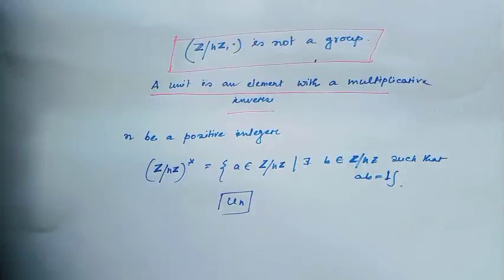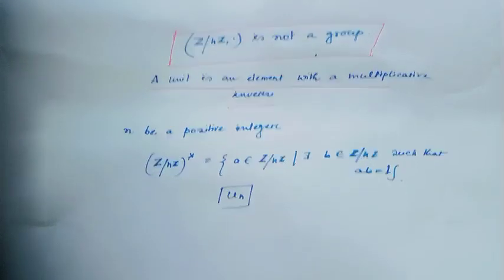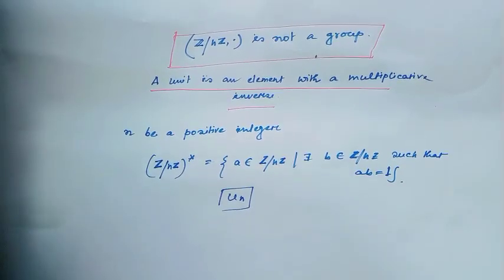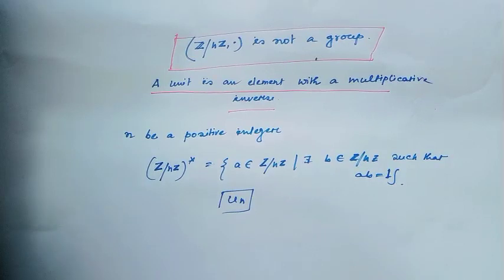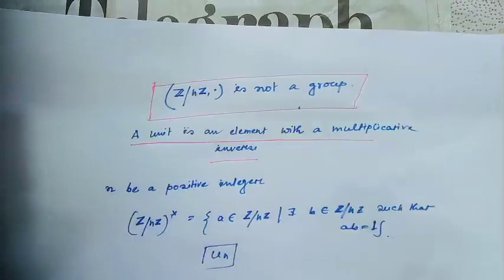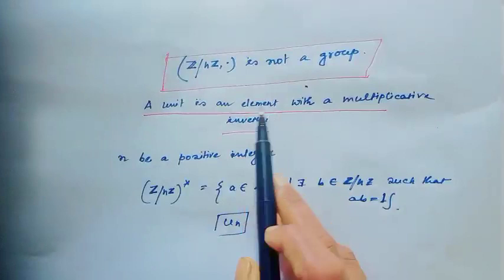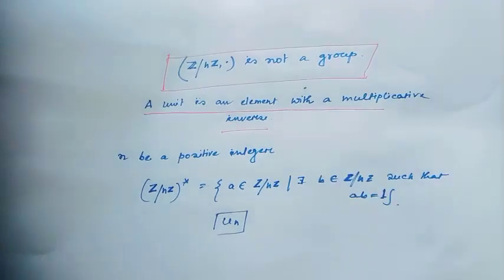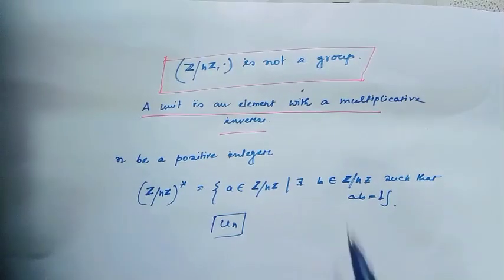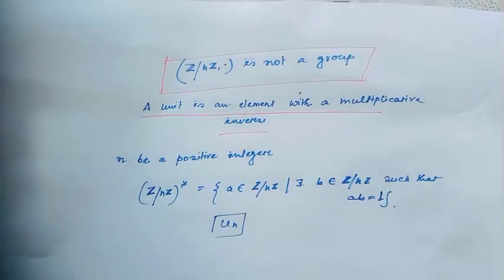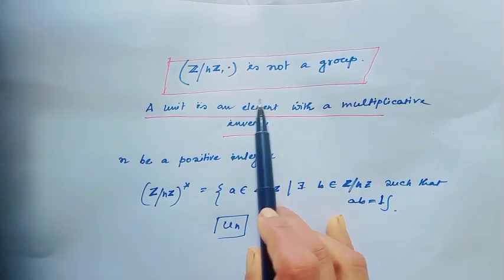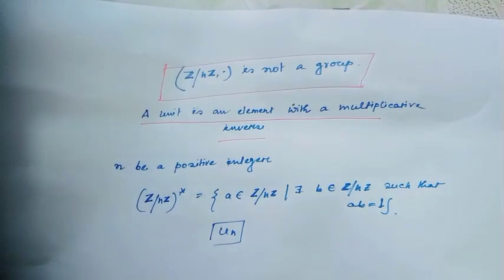Welcome back. Today I will discuss group theory as a review. Recall from my group theory lecture: Z mod nZ with respect to multiplication is not a group. We all know that a unit is an element with a multiplicative inverse, and Z mod nZ with respect to multiplication is not a group.